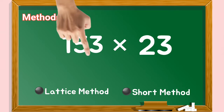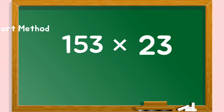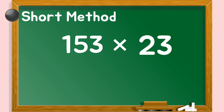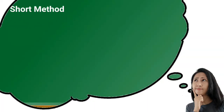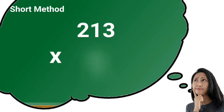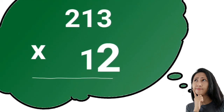Let's say we will solve it using the short method. To do this, we have to remember our lesson in multiplying without regrouping using the short method. To multiply using the short method, you have to remember this direction.